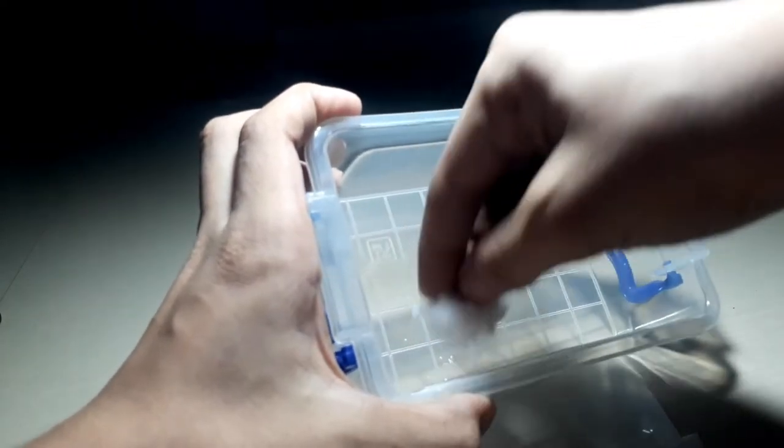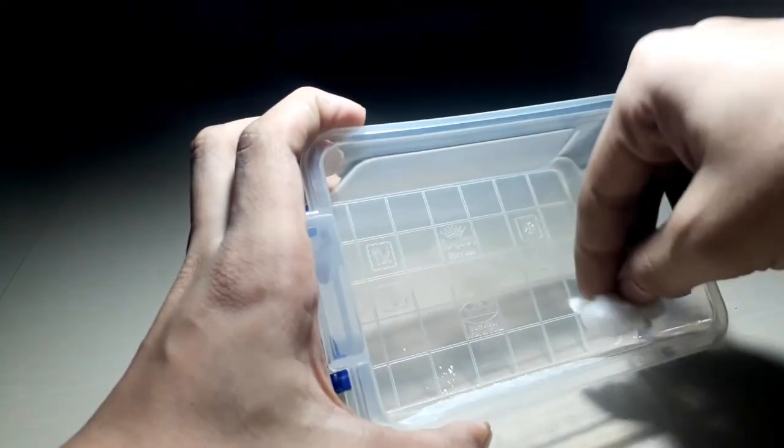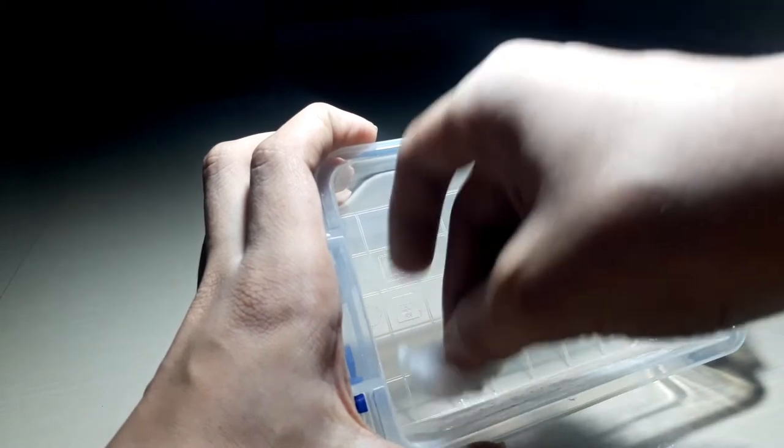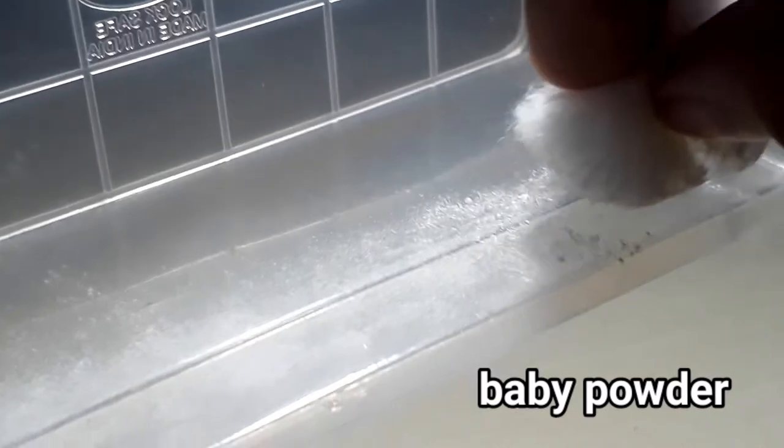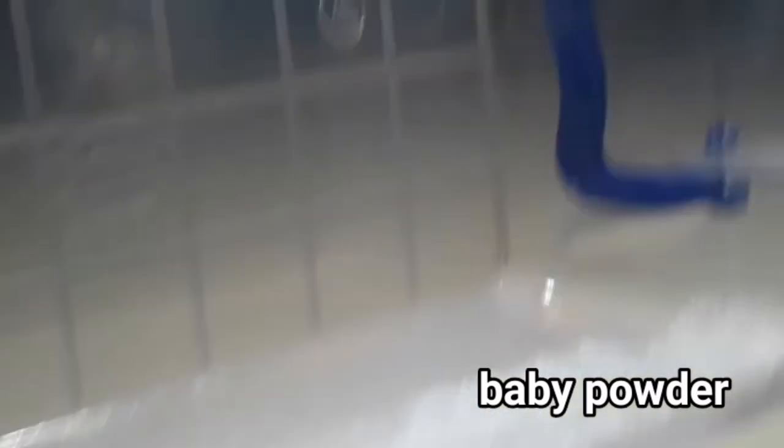Now it's time to apply the barrier. You can use any kind of barrier like baby powder, olive oil, fluon or anything you know works for your ants. I'm using dry baby powder. Once you have applied the barrier, you have pretty much made it.